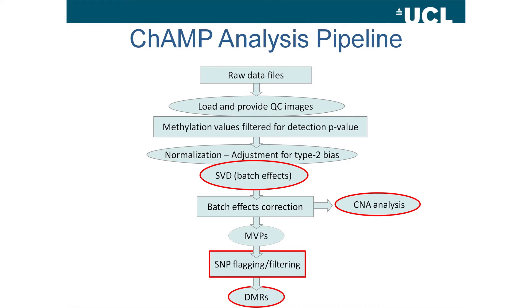My talk will focus on the four aspects of the pipeline that make it unique to the other available pipelines. The pipeline starts with the IDAT files or raw data files, loads them and provides QC images, then calculates a methylation value. You've heard about the beta value; you also have the option of using an M value, which has been shown to be more useful in smaller studies. You can filter these for the detection p-value for those probes that weren't detected, and there are four normalization methods that adjust for the type 2 bias.